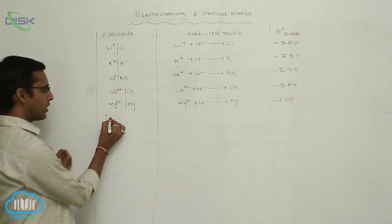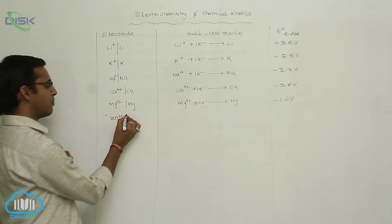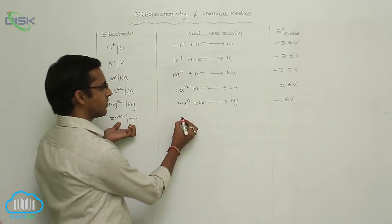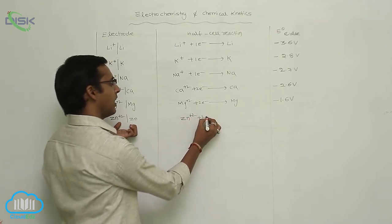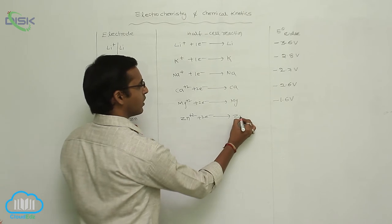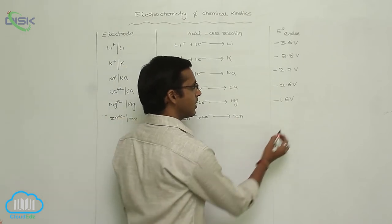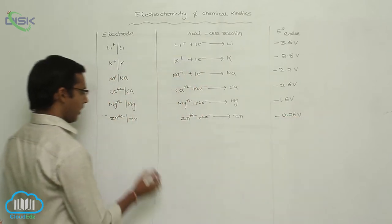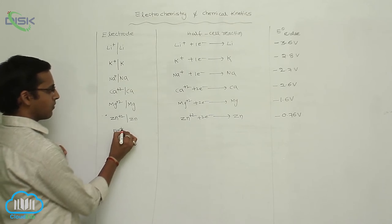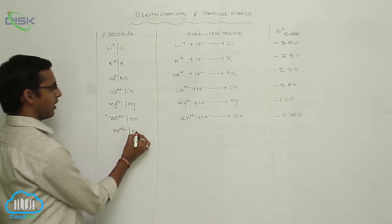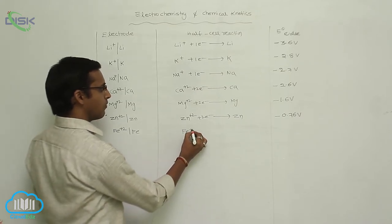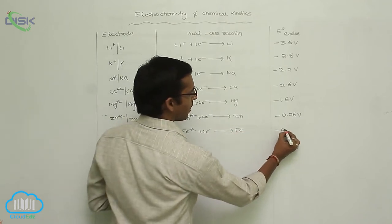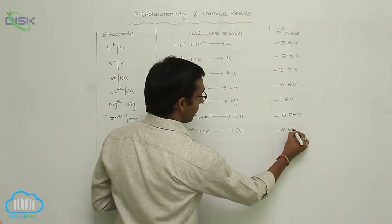Next is zinc: Zn²⁺ | Zn. Zinc also gains two electrons and is converted to Zn. Its E° value is −0.76 V. Next is iron: Fe²⁺ | Fe. Fe²⁺ gains two electrons and is converted to iron metal. Its E° value is −0.68 V.